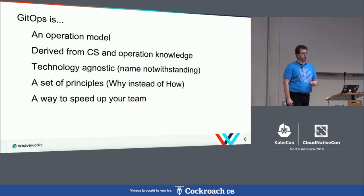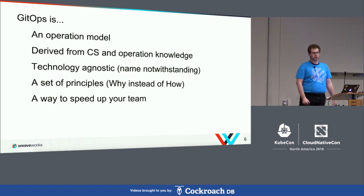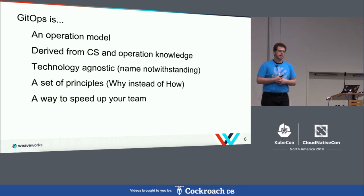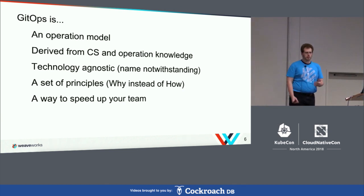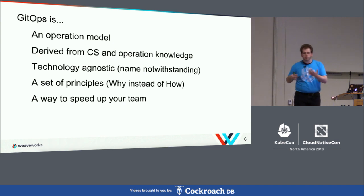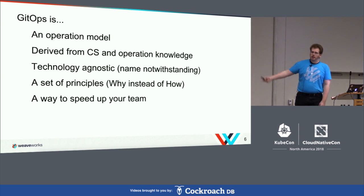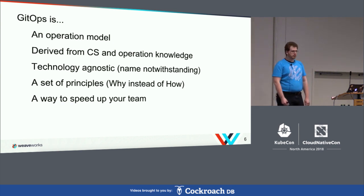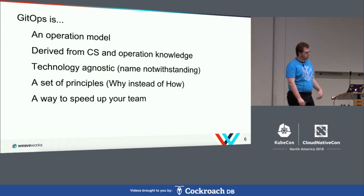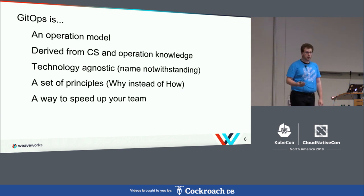GitOps is an operations model — it's how you operate on your infrastructure. It's derived from computer science and operational knowledge; we've been running Kubernetes for about three years at Weaveworks. Name notwithstanding, it is actually technology agnostic — you could do the same things with other version control systems. We like Git for reasons to do with security and auditability.